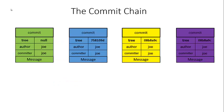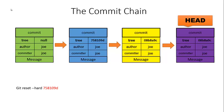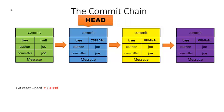Another thing I want to talk about is how the hard reset will erase commits — really any of these resets will. So let's say I go ahead and do a reset hard to 758109d, which is the blue commit. My head's going to move back there. Now let's say I change some files — it completely wiped out all the work done in the yellow and purple commits.